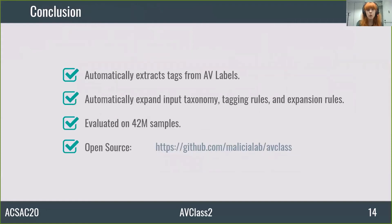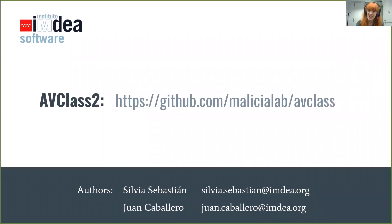To sum up, we presented AV Class 2, which automatically extracts tags from AV labels that categorize malware samples according to their malware class, family, behaviors, and file properties. It uses and builds an open taxonomy that does not use a closed set of tags, and thus can handle new tags introduced over time by AV vendors. It was evaluated on 42 million samples from 11 datasets, and it is open source. This is the end of the presentation. Thank you so much for your attention, and if you have any doubt, I'll be glad to answer your questions.